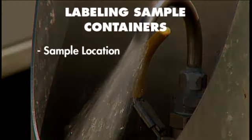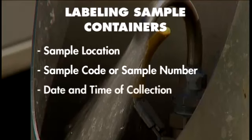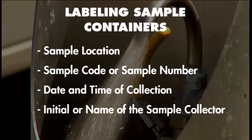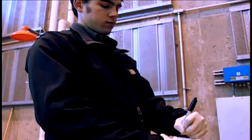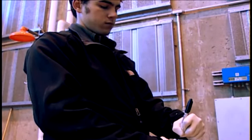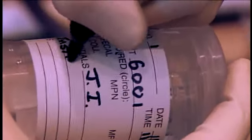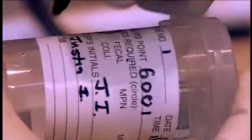Record the sample location, sample code or sample number, date and time of collection, initials or name of the sample collector, and type of analysis needed. This information should be written in waterproof ink on the label, which is or will be securely affixed on the sampling container.